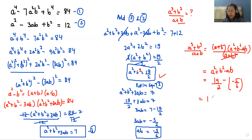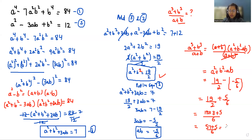So it becomes 19 by 2 plus 5 by 6. Taking the LCM, which becomes 6: 19 multiplied by 3 plus 5, that is 57 plus 5 by 6, equals 62 by 6. Dividing numerator and denominator both by 2, we get 31 by 3. So the final value is 31 by 3.